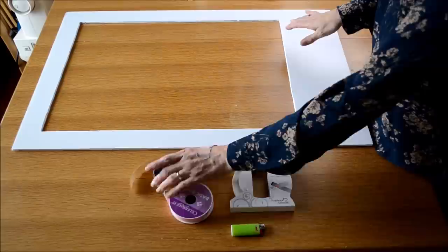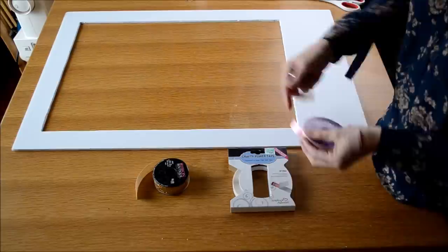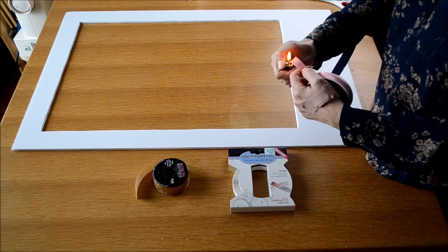If you're using satin ribbon, I do suggest doing the end with a little lighter so they don't fray. Not a lot, but it's just to melt the end so they don't fray.